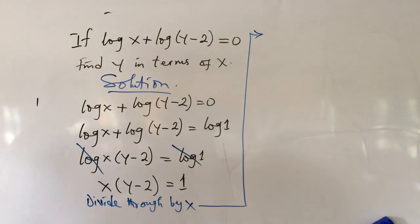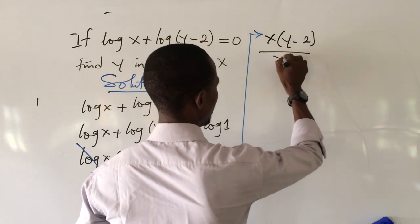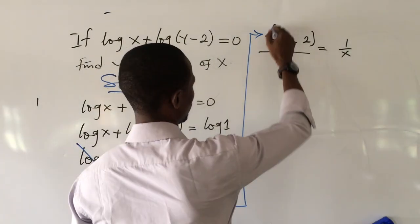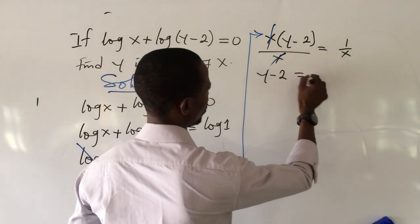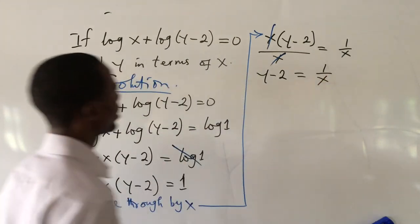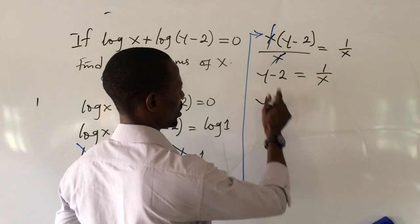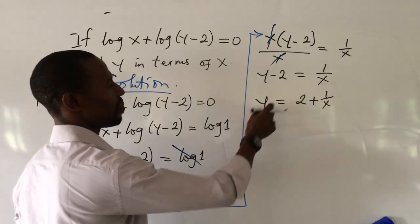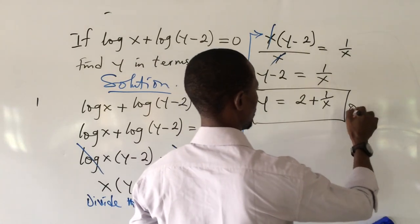Dividing through by x: x(y minus 2) over x equals 1 over x. The x cancels on the left, leaving y minus 2 equals 1 over x. Therefore y equals 1 over x plus 2. We have made y the subject of the formula, which is what we were asked to find. That is the solution to this logarithm equation.